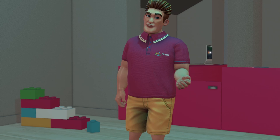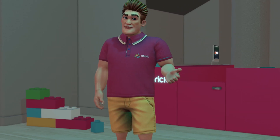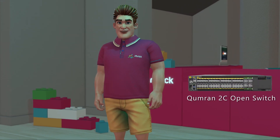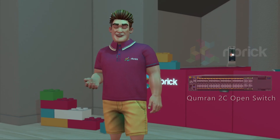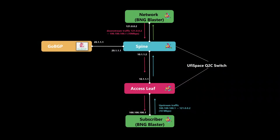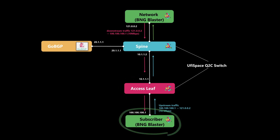Here we're going to demonstrate the BGP FlowSpec functionality, working on an open switch with a Kumron 2C Broadcom chipset, running RT Brick software. Let's first see the topology used for the demo. We have two Kumron 2C open switches. One is running an RT Brick Leaf software image. This switch is acting as a BNG, onboarding DHCP subscribers. It's connected to our BNG Blaster, which is an in-house open source tool that can simulate large volumes of subscribers, layer 3 protocols, and traffic volumes.